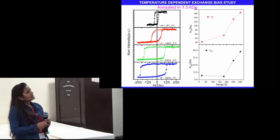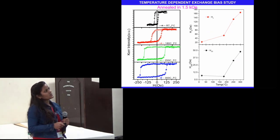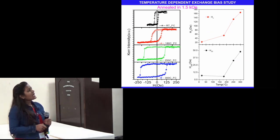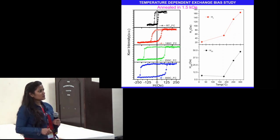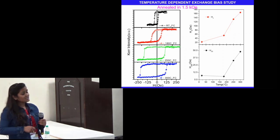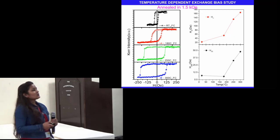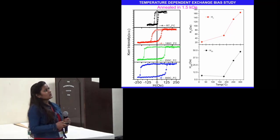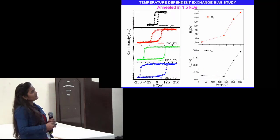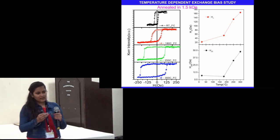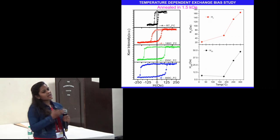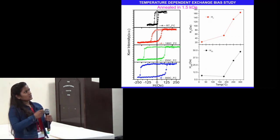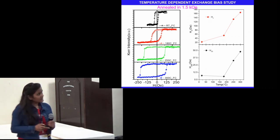We then annealed these samples at various temperatures in the presence of a field and observed that at 250°C there was a shift in the hysteresis loop — the film exhibits exchange bias, and specifically in-plane exchange bias. This may be because without application of the field there were in-plane moments at the interface, and with the field these moments now have a preferential direction of pinning, resulting in this exchange shift.